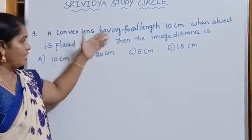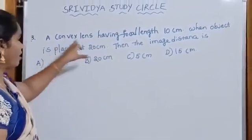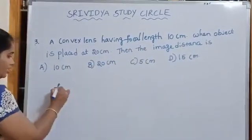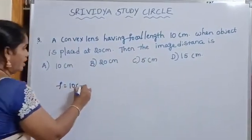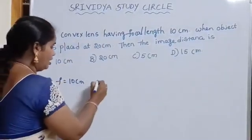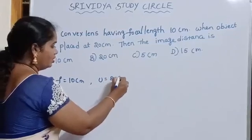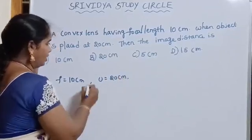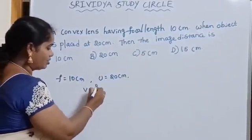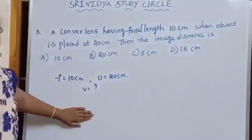Next, we have to discuss another problem. Here given a convex lens having focal length, F is equal to 10 centimeters and object is placed at 20 centimeters. Generally, object distance is denoted by U. U is equal to 20 centimeters. Then the image distance is, generally V is equal to question mark. Now, we have two methods to solve.